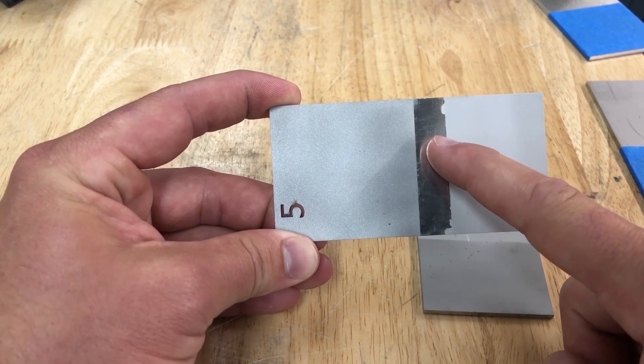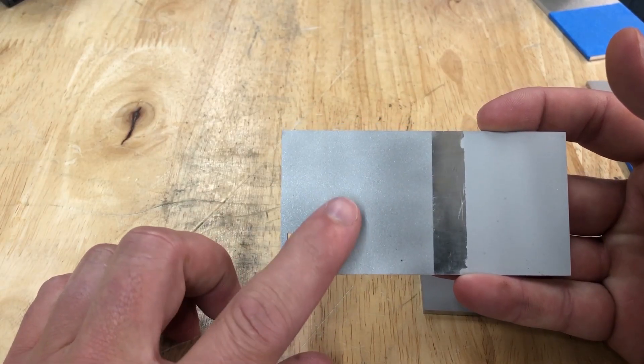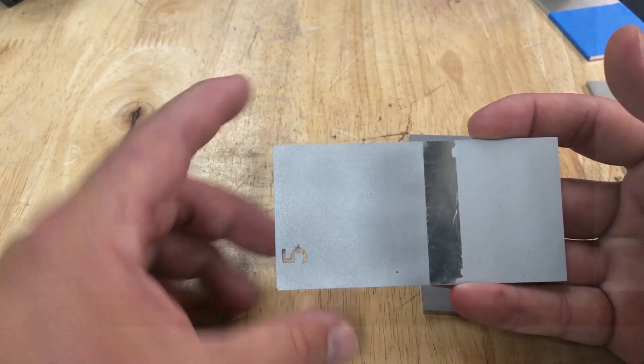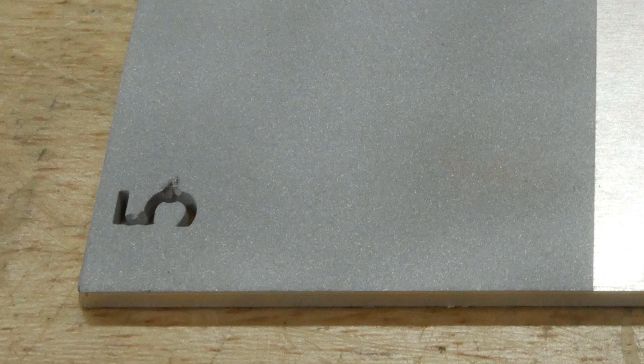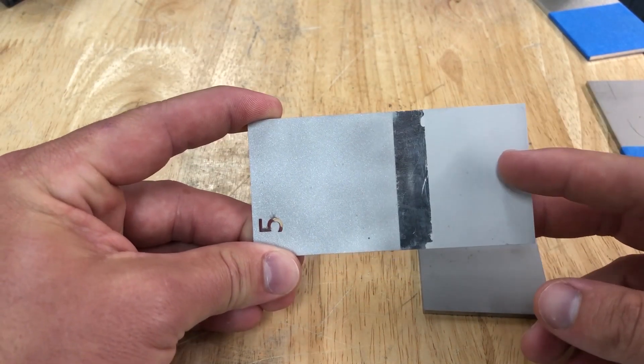This is raw aluminum here, this is what the substrate looked like before. And then over here this is dry blast. We used 220 grit aluminum oxide at 90 PSI, 3 inches from the part, we shot at a 90 degree angle straight into the part.